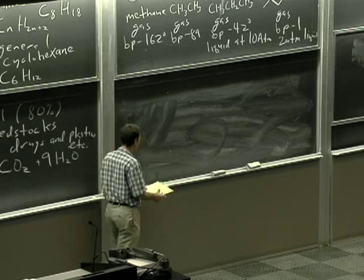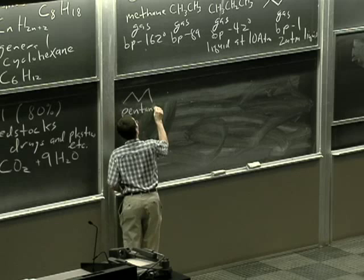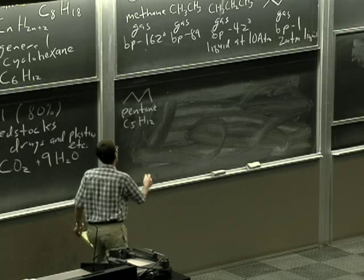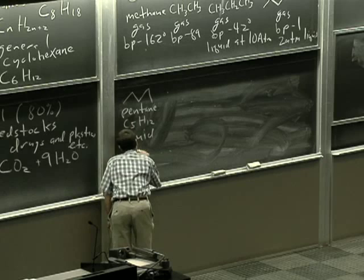If we continue along the series of alkanes, pentane C5H12. Now pentane's a liquid. It's a low boiling liquid. So we've gone from a gas to a liquid by adding one carbon. But its boiling point is just 36 degrees.